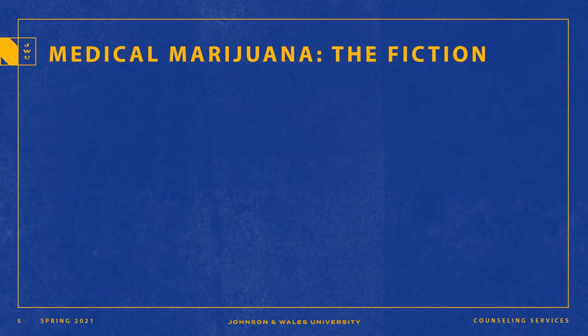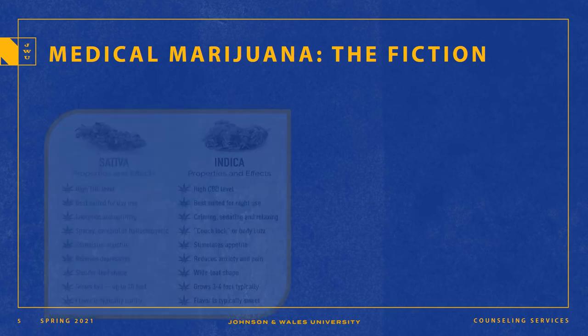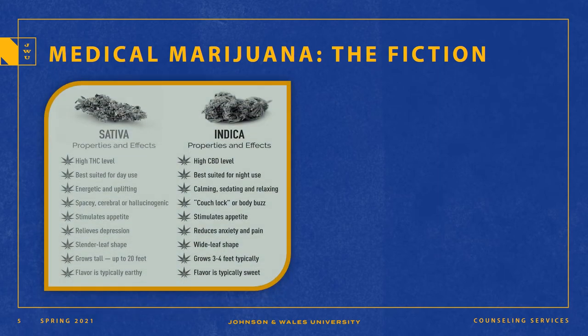Now we're going to take a look at the medical marijuana industry and some of the fiction that surrounds it. Here we see an infographic that is very common on the internet or in the recreational or medical marijuana industry, showing different strains of marijuana and what the potential benefits could be. As we saw on the previous slide, there are really only a few FDA-approved medications made from marijuana, used to treat pretty serious medical conditions. The research on marijuana's medical usage does not show a lot of benefits for many of the diseases and syndromes that the marijuana industry claims marijuana can treat.